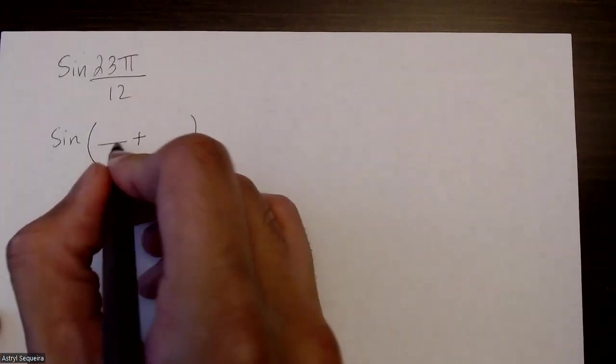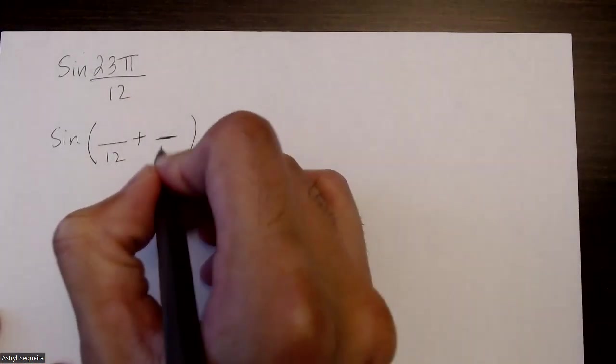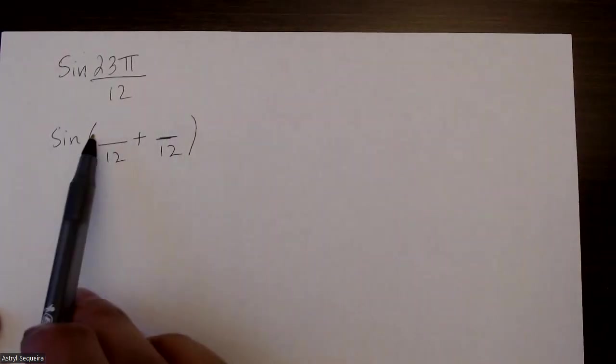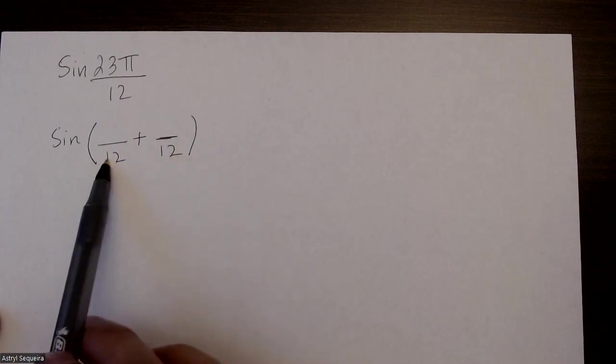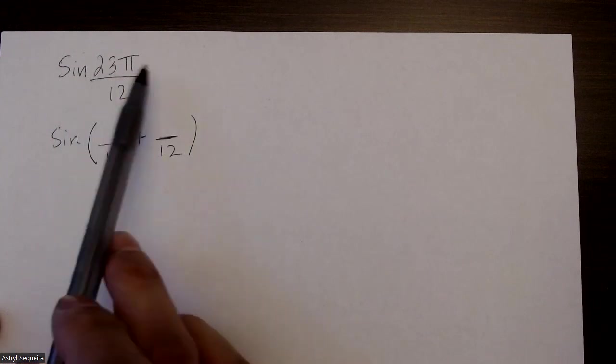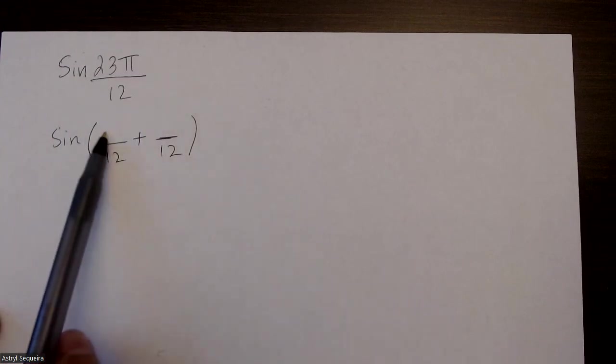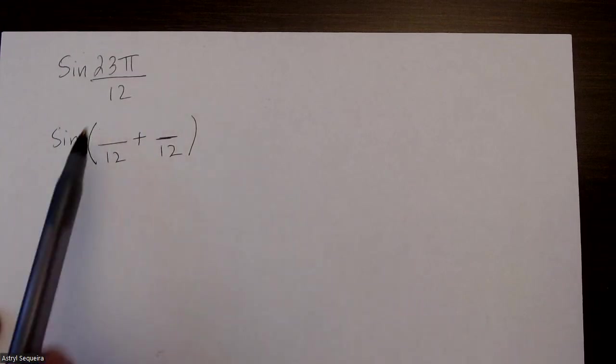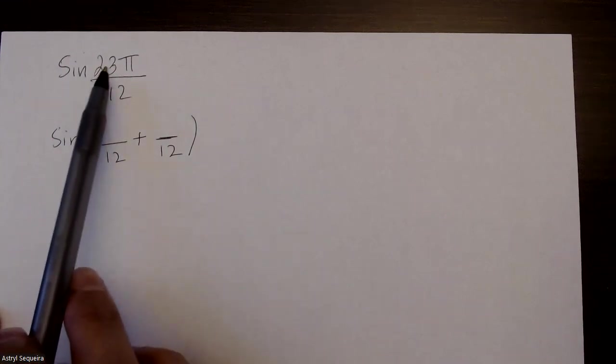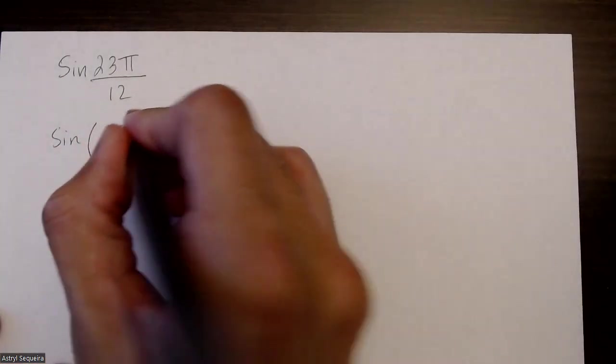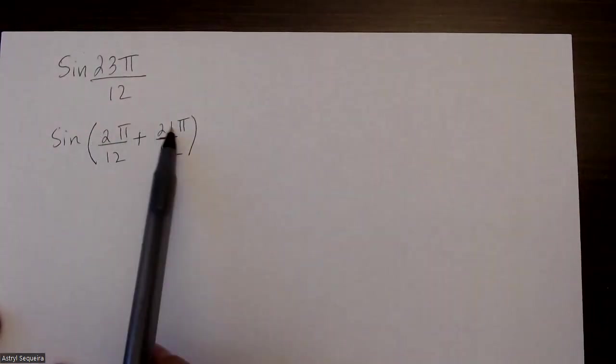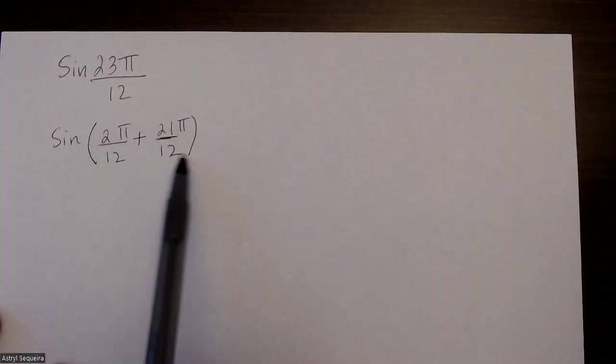Both my denominators are going to be the same, 12. Now I want to pick two numerators such that they can both simplify with 12. So think of two numbers that add to 23π, like 1 and 22π. But if I put 1 here, 1 over 12 does not simplify, so that's not going to work. I can do 2π plus 21π, and what you notice is that both of these numbers will simplify with 12. That's how you know you've picked the right numbers.